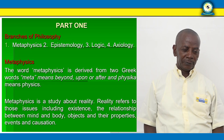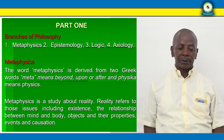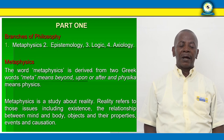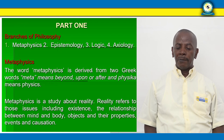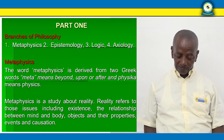Let's start with metaphysics. The word metaphysics is derived from two Greek words: meta means beyond, upon, or after, and physica means physics. Therefore, metaphysics is a study about reality. The word reality refers to those issues including existence, the relationship between mind and body, objects and their properties, events, and causation.